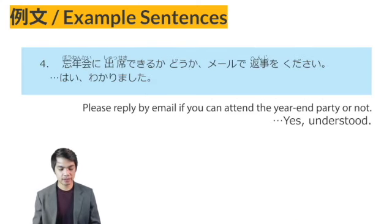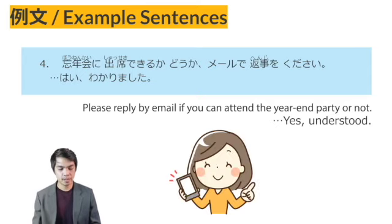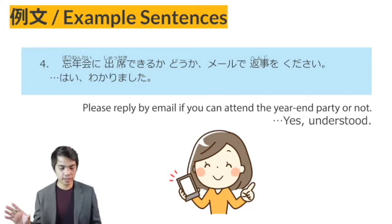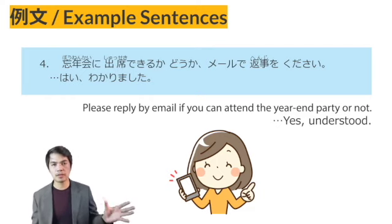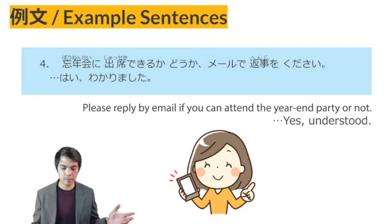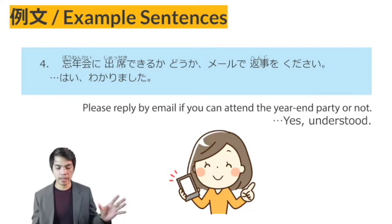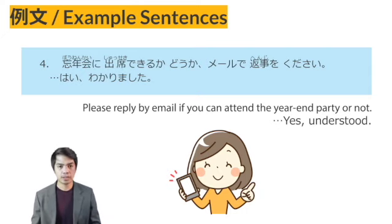Example sentence number 4: Bounenkai ni shusseki dekiru ka doka, meeru de henji wo kudasai. Hai, wakarimashita. BOUNENKAI means year-end party. SHUSSEKI means attendance — to attend the year-end party. SHUSSEKI DEKIRU KA DOKA — whether you can attend or not. MEERU DE — by mail — HENJI WO KUDASAI — please reply. Hai, wakarimashita — understood.